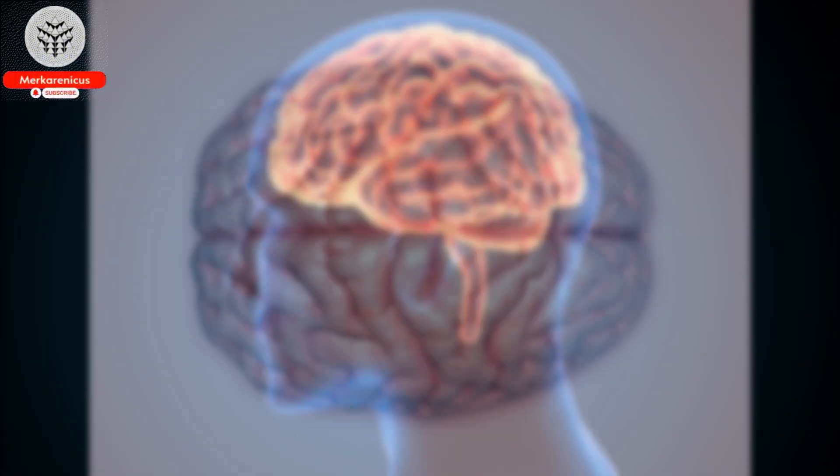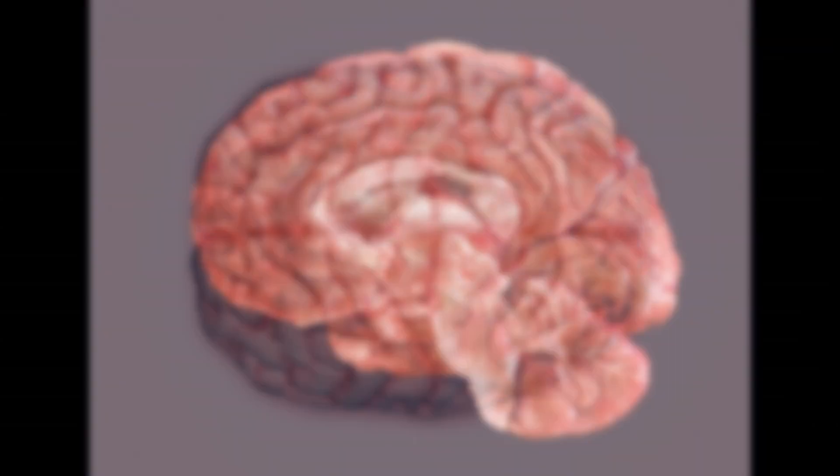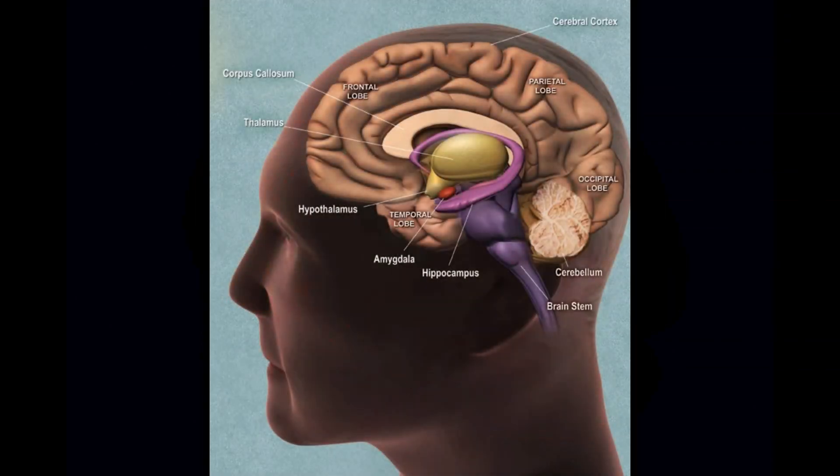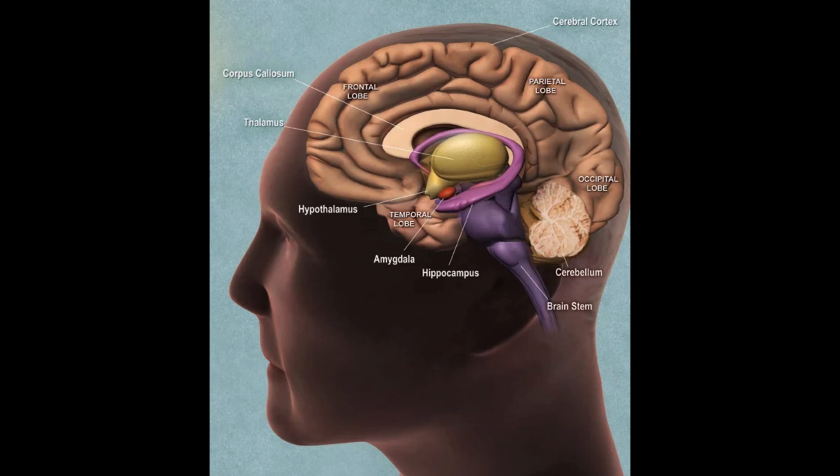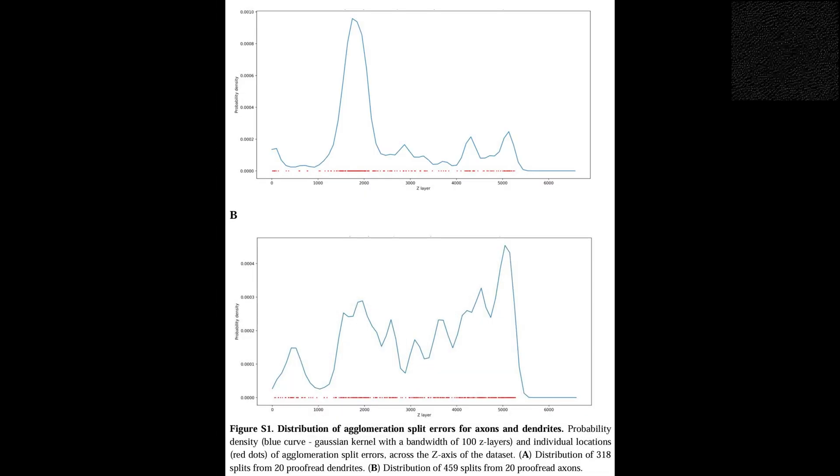Although a cubic millimeter may seem insignificant, it is actually a remarkable space housing an impressive array of components. Within this minuscule volume we find 57,000 cells, 230 millimeters of blood vessels, and an astounding 150 million synapses amounting to a staggering 1,400 terabytes of data.